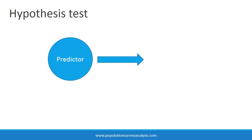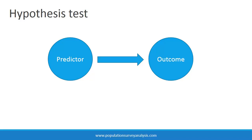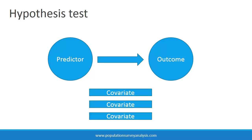To answer this type of question, the researcher tests the effect of one predictor on one outcome. To predict something implies causation, and cross-sectional survey data cannot be used to determine causation of health or social outcomes. But a hypothesis test does provide evidence that a factor is or is not associated with an outcome after controlling for other potential confounding factors.